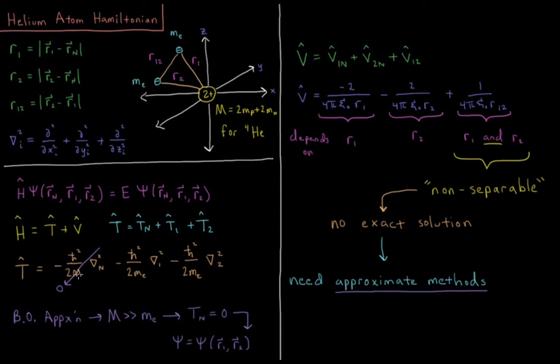Minus h-bar squared over 2 big M, del squared N, Laplacian for the nucleus, minus h-bar squared over 2 times mass of the electron, del squared electron 1, minus h-bar squared over 2 times mass of the electron, del squared of electron 2, each of those three kinetic energy terms.